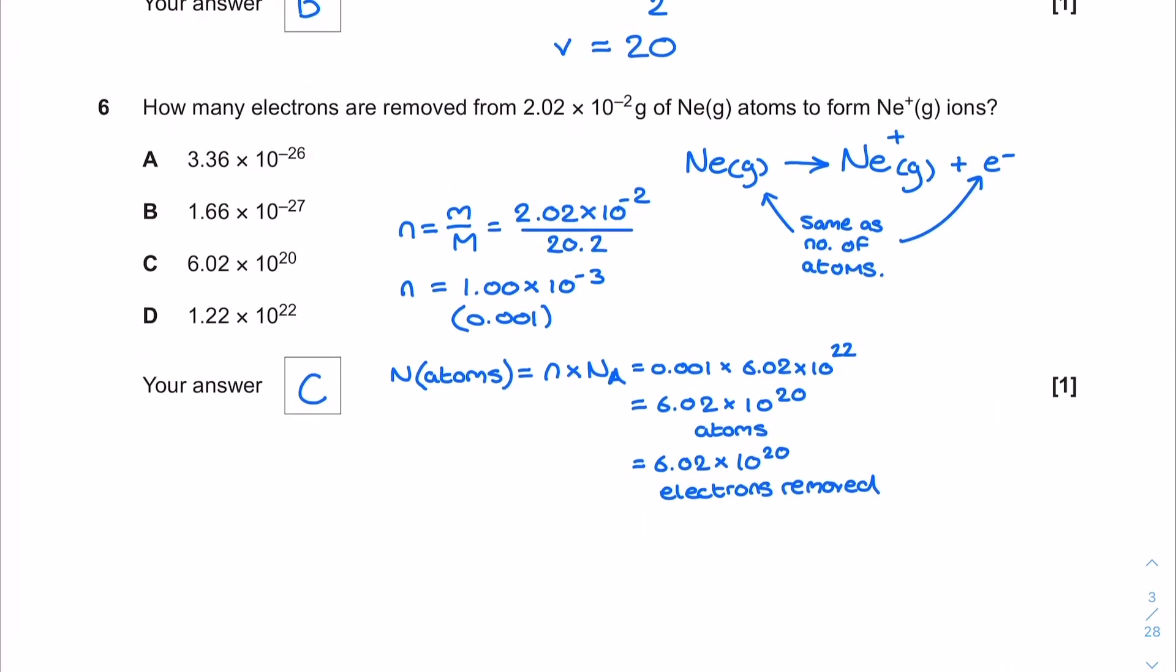How many electrons are removed from 2.02 times 10 to the power of minus 2 grams of neon atoms to form gaseous neon single plus ions? This question is a little odd because if you know what a first ionization energy is and you can write the equation, the number of electrons removed is the same as the number of gaseous atoms we had. All we need to do is find out how many neon atoms there are in this mass value. Moles equals mass divided by molar mass using 20.2 for neon. That gives me a mole value of 1 times 10 to the power of negative 3. Then I multiply that by the Avogadro constant which gives me the correct answer here of C.